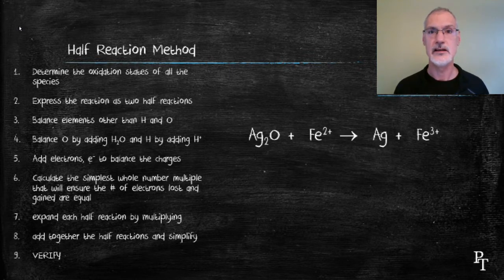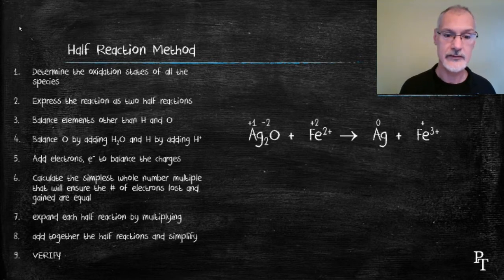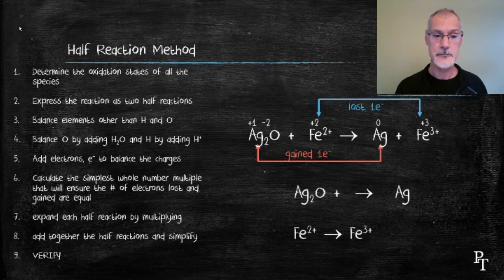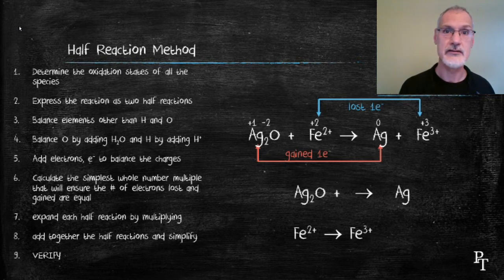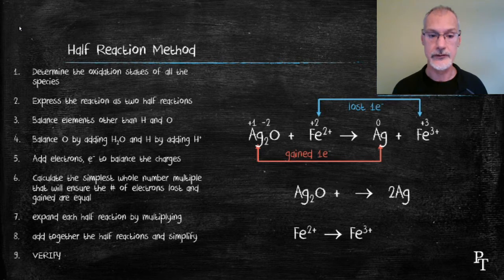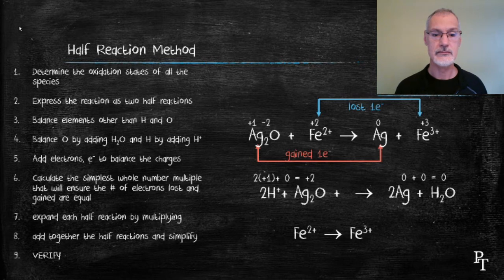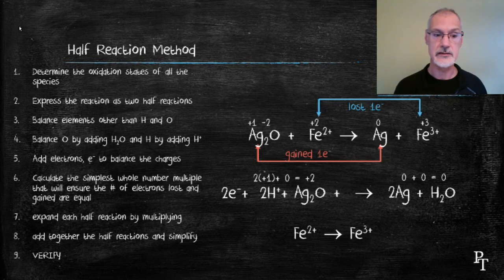Let's take a look at a second example. Again, I'll identify the oxidation states of the elements and identify the two half reactions taking place. I begin the first equation by balancing everything other than hydrogen and oxygen, so I need two silvers. I'll bring a water molecule into play to balance the oxygens and two acid particles to balance the hydrogens. Checking the charge, the plus two means I need to give that side two electrons to bring it down to zero.